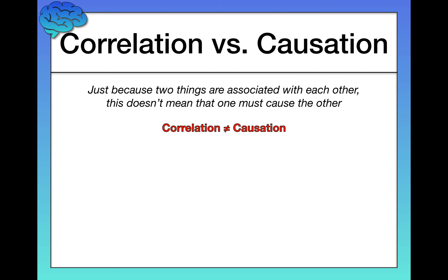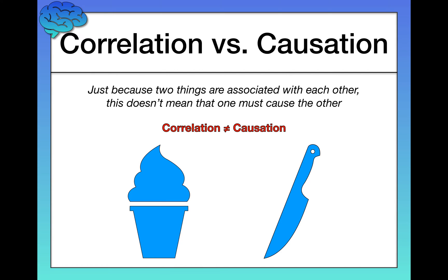Let me illustrate through an example. It is a well-documented finding — we see this over and over in a variety of studies — that there's a significant correlation between ice cream sales and crime rates.